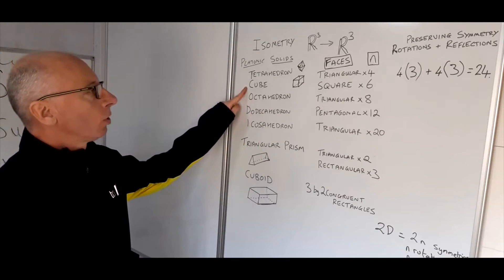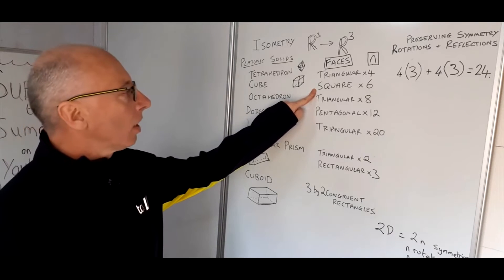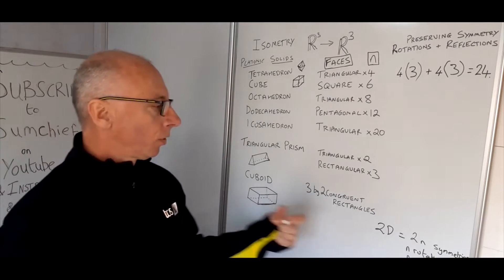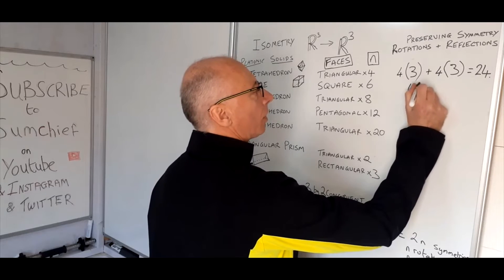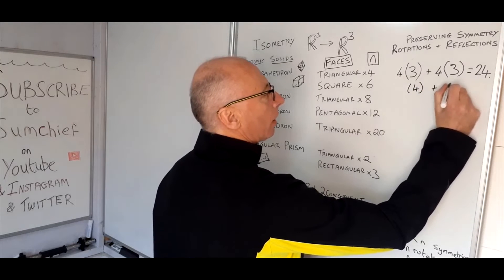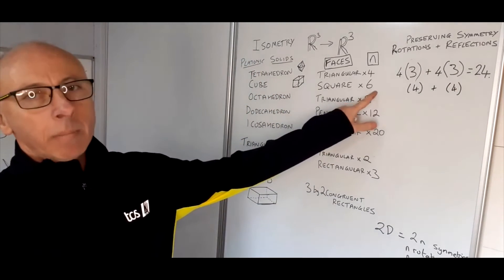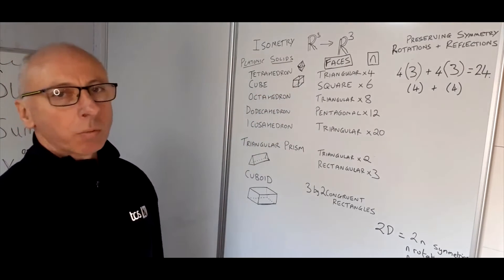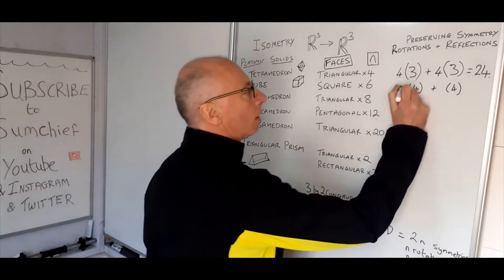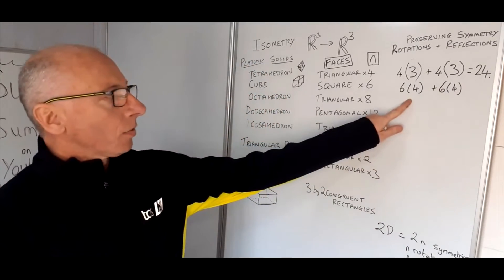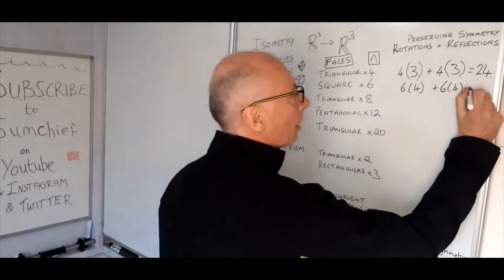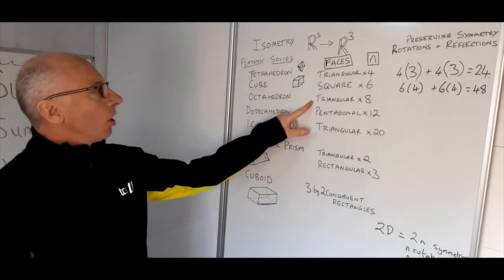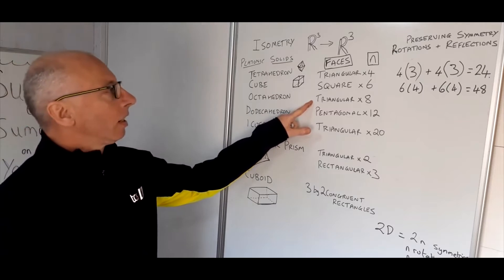Now the cube is made up of square faces. A square has four sides, giving four rotations and four reflections. The cube has six faces, and whichever face you sit it on, the rotations and reflections will be the same. So we multiply each by six: six fours are 24, plus another 24 — that means there are 48 preserving symmetries of a cube.